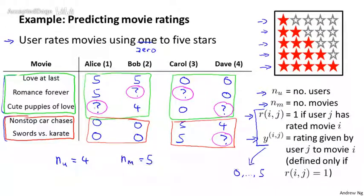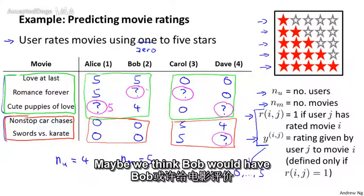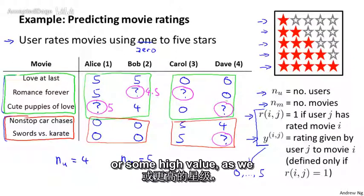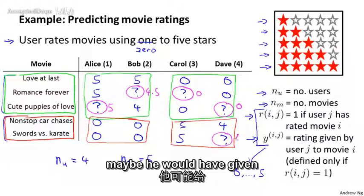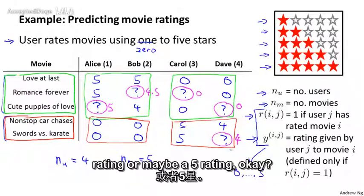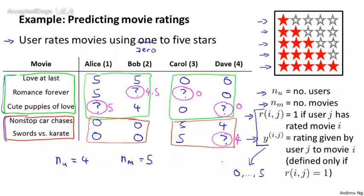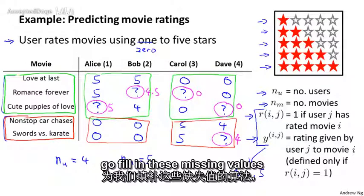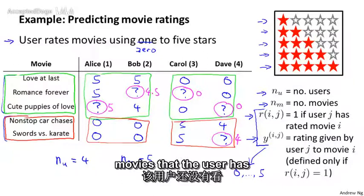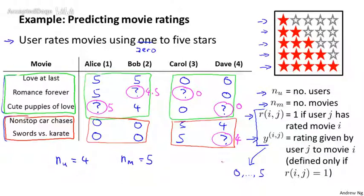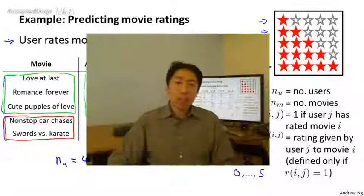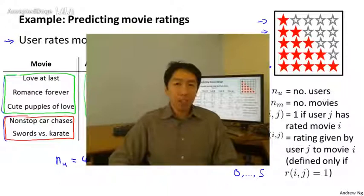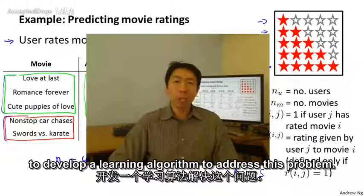Looking at this data, Alice and Bob both like the romantic movies, so maybe we think Alice would have given Cute Puppies of Love a five, and Bob a four point five or some high value. Whereas Carol and Dave would have given those very low ratings. And if Dave really likes action movies, maybe he would have given Swords of Karate a four or five rating. Our job in developing a recommender system is to come up with a learning algorithm that can automatically fill in these missing values, so we can recommend movies that the user has not yet watched. In the next video, we'll start to develop a learning algorithm to address this problem.